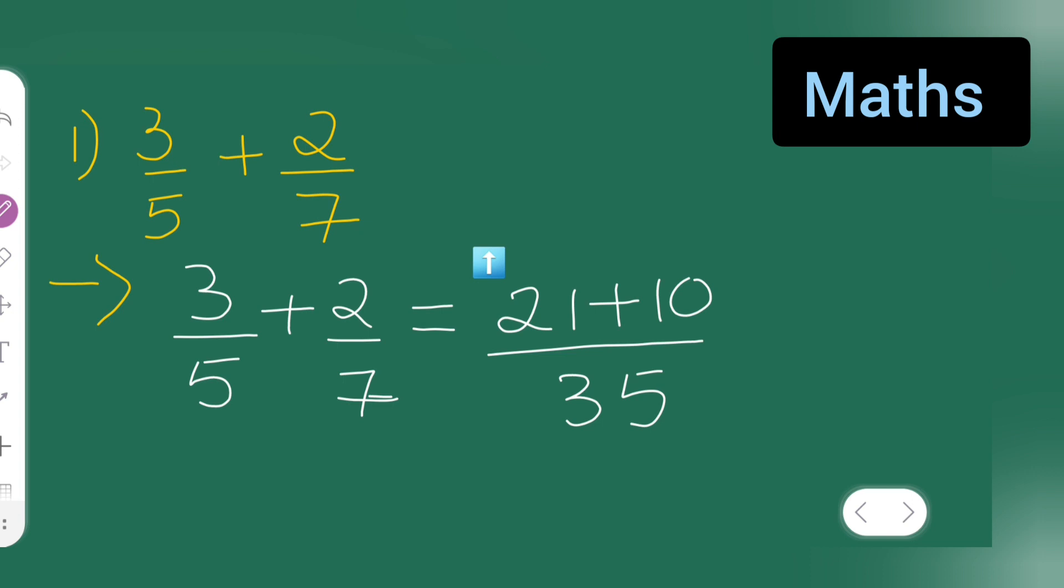Now add these two numbers. 21 plus 10 will give you 31, so it will be 31 upon 35. That is your answer. So I hope you all have understood how to add when the denominators are different.